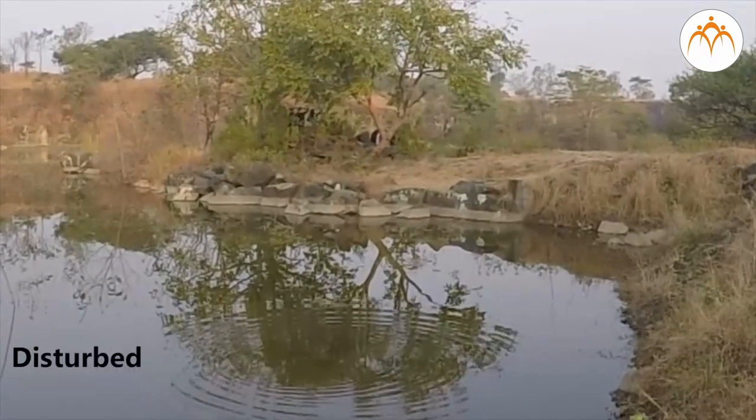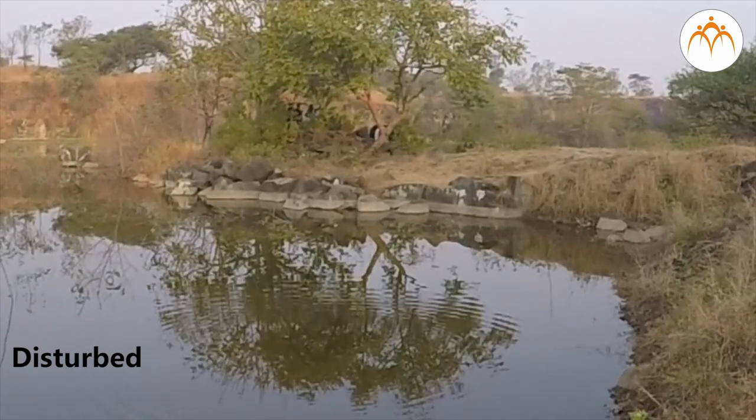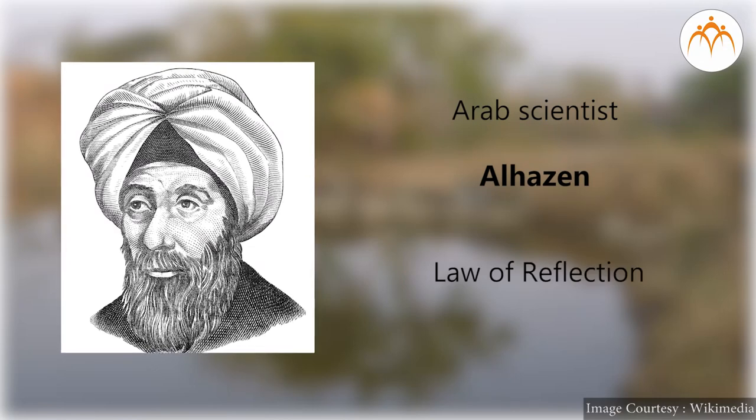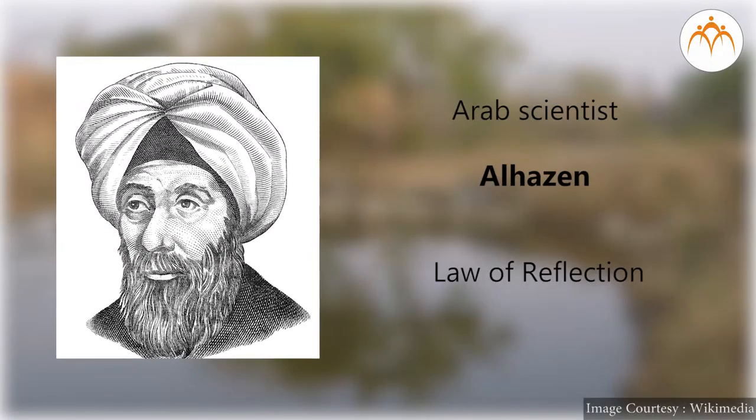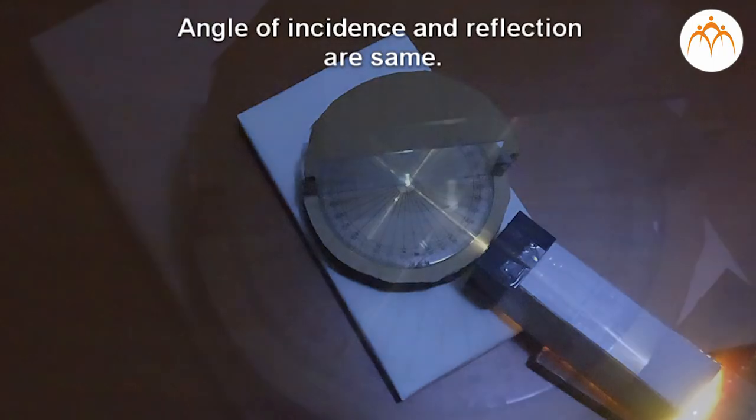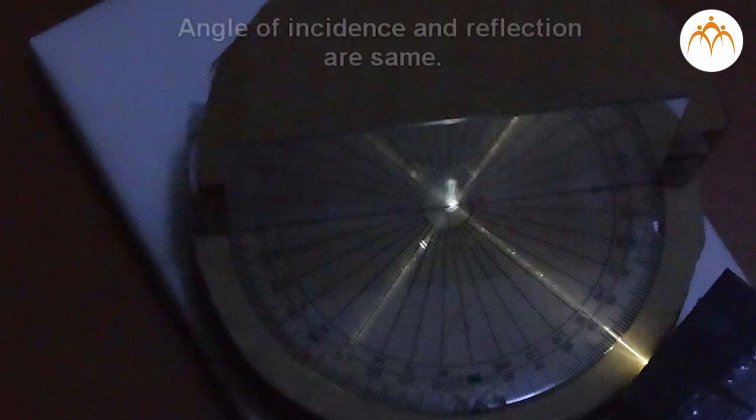But if water is disturbed by the wind or any movement in water, light is reflected in many directions. It was not until the 11th century that the Arab scientist Alhazin came up with the law that describes exactly what happens when the ray of light strikes the surface and bounces off it.